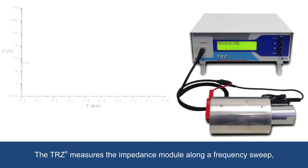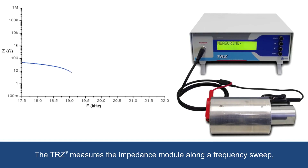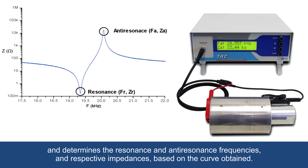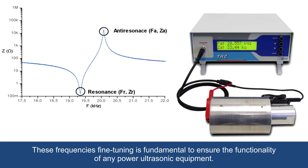The TRZ measures the impedance module along a frequency sweep, and determines the resonance and anti-resonance frequencies and respective impedances based on the curve obtained. These frequencies' fine tuning is fundamental to ensure the functionality of any power ultrasonic equipment.